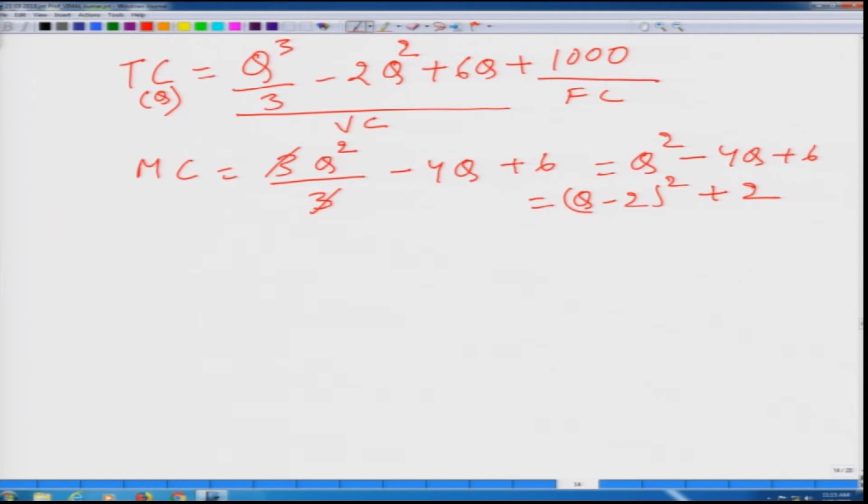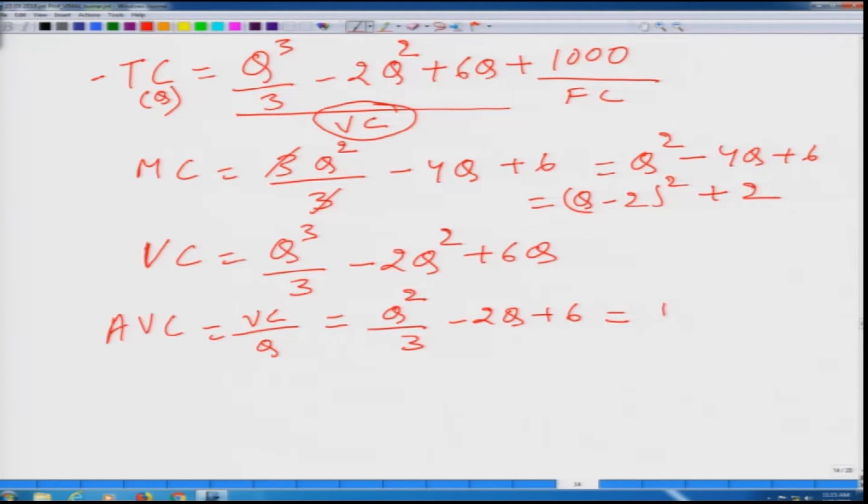Similarly, by dividing the variable cost part of the total cost function by q, because what is the variable cost? Variable cost is q to the power 3 divided by 3 minus 2q square plus 6q. So average variable cost is going to be vc divided by q. And if we do that, this is what we will get, which can be rewritten as q squared over 3 minus 2q plus 6.